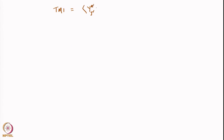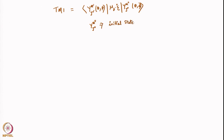Welcome to lecture number 28 of the course quantum mechanics and molecular spectroscopy. In the last class, we were looking at the transient moment integral for the rotational transitions. The TMI was equal to Y_J'M'(θ,φ) μ₀ Y_J''M''(θ,φ), where double prime belongs to the initial state and single prime belongs to the final state.